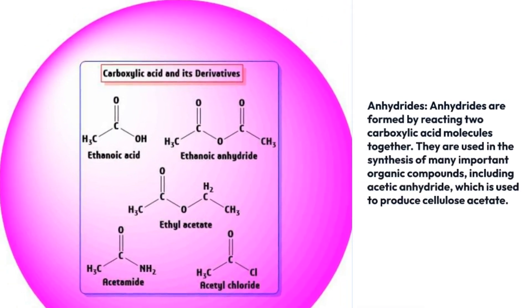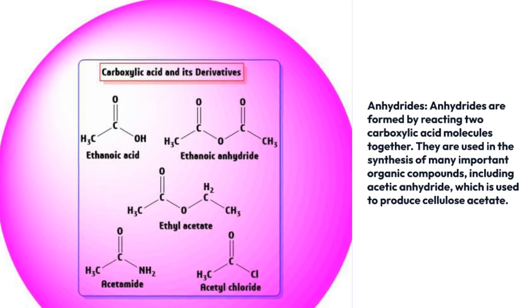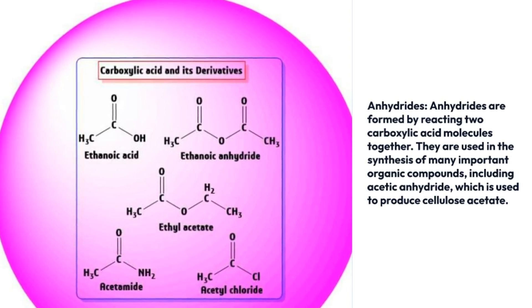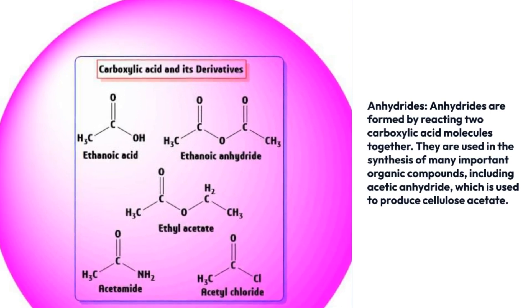Anhydrides are formed by reacting two carboxylic acid molecules together. They are used in the synthesis of many important organic compounds, including acetic anhydride, which is used to produce cellulose.